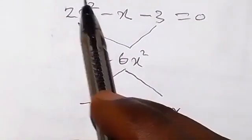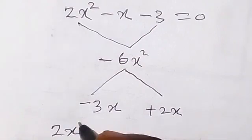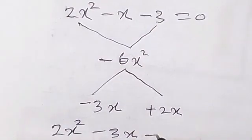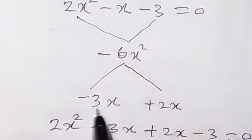By the time we rewrite this now it will give us 2x² then minus 3x plus 2x then minus 3 equals to 0. We have replaced that minus x at the middle with these two numbers. Then let us group it into two now and factorize.